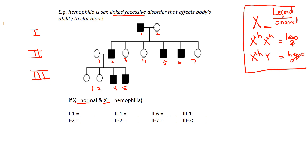Anyone shaded in the pedigree has the disorder. If it's a square, we know it's a male. So we can fill in their genotypes pretty quickly — X superscript H and Y for the affected males.